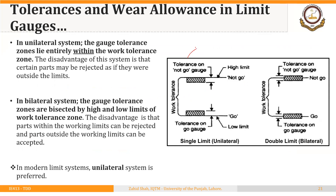For a hole to be inspected, the MMC is its lower limit. So the go gauge will have a basic size equal to the lower limit of the hole. The LMC of the hole is its higher limit, so the basic size of the no-go gauge will correspond to the LMC or higher limit of the hole. We then apply tolerances to these basic sizes of the gauges.